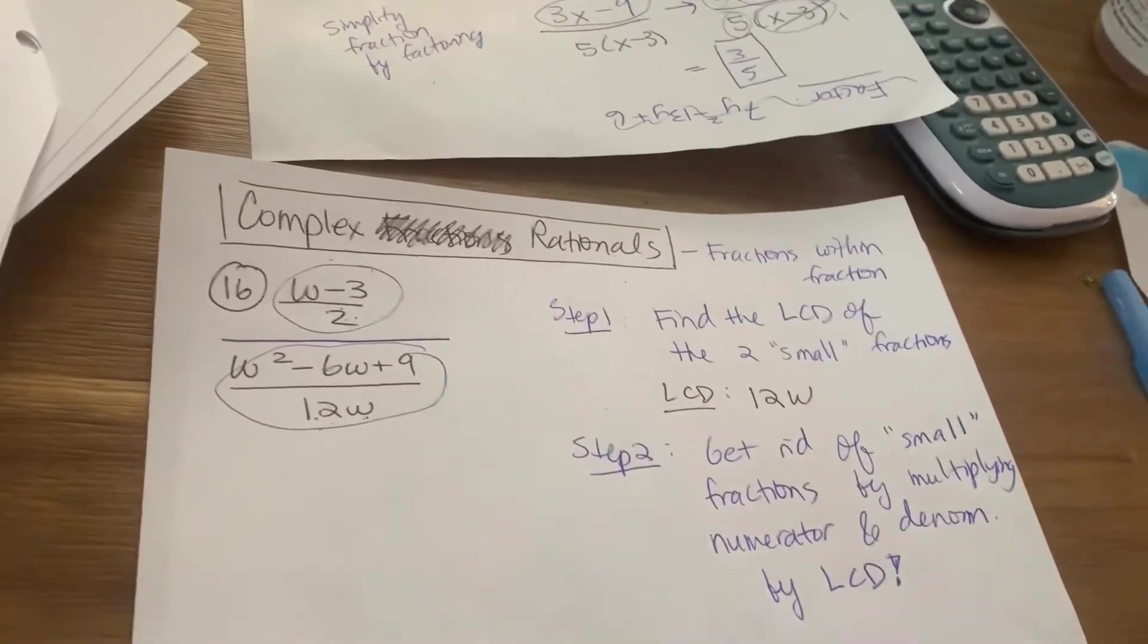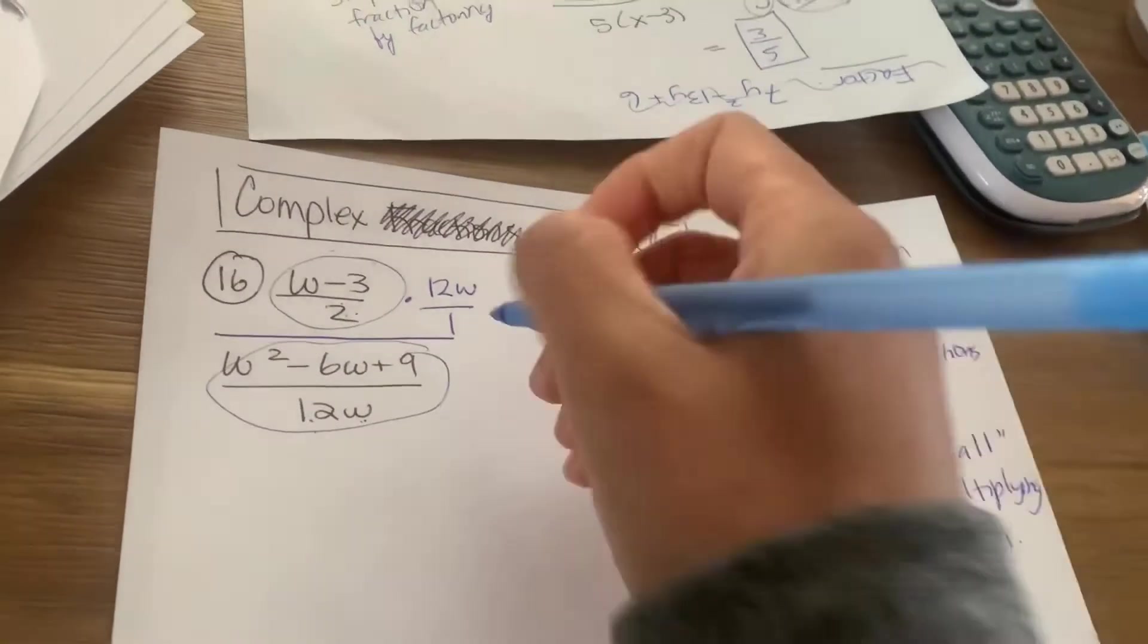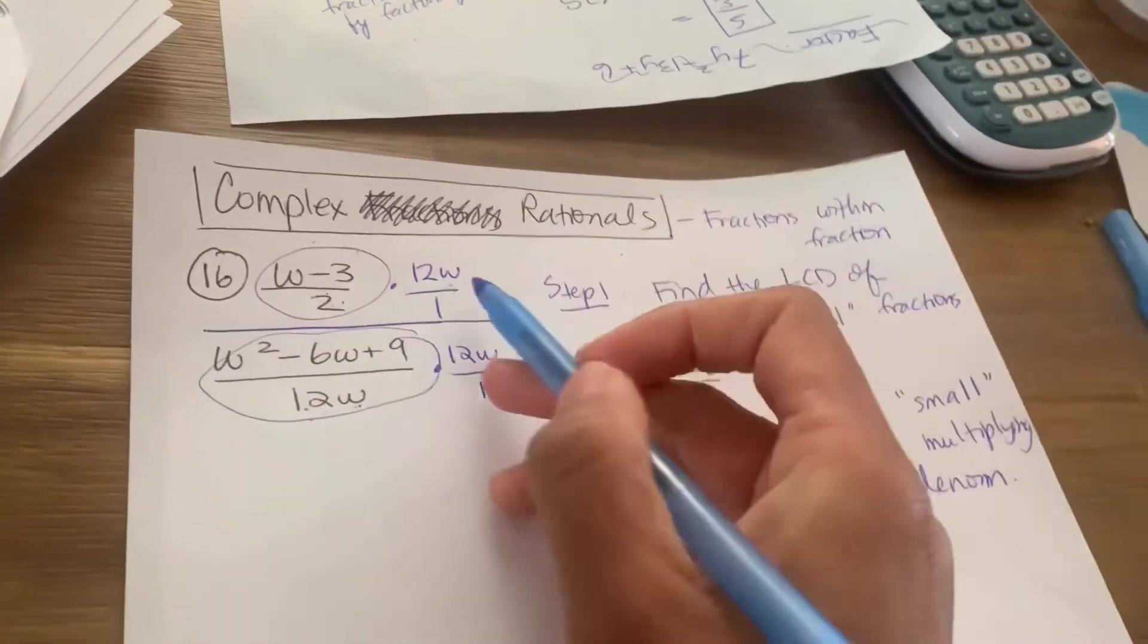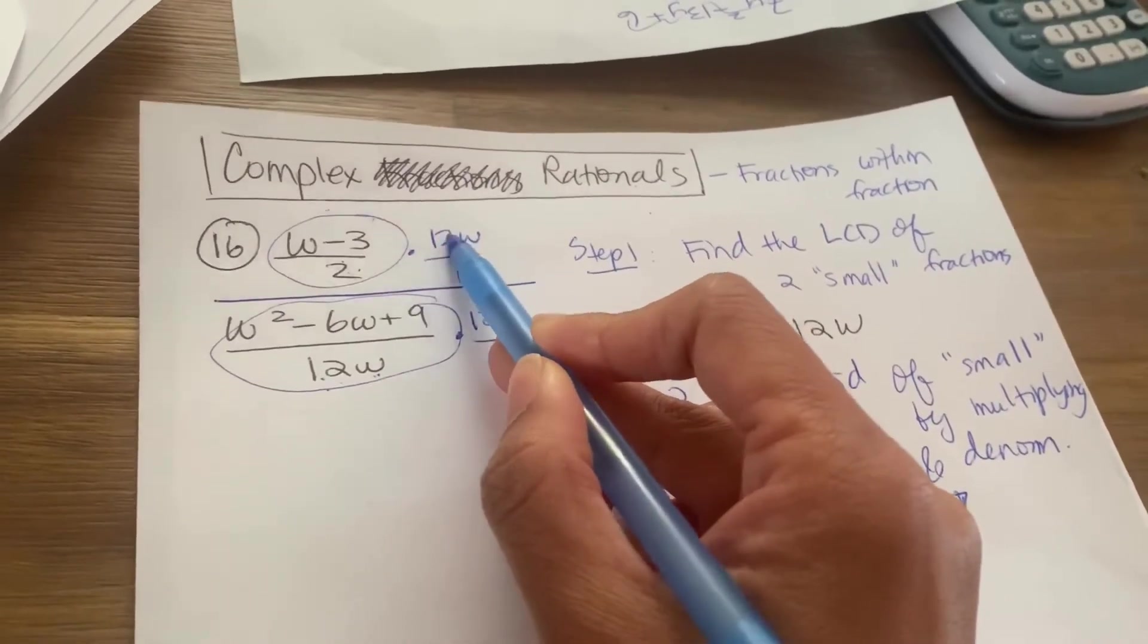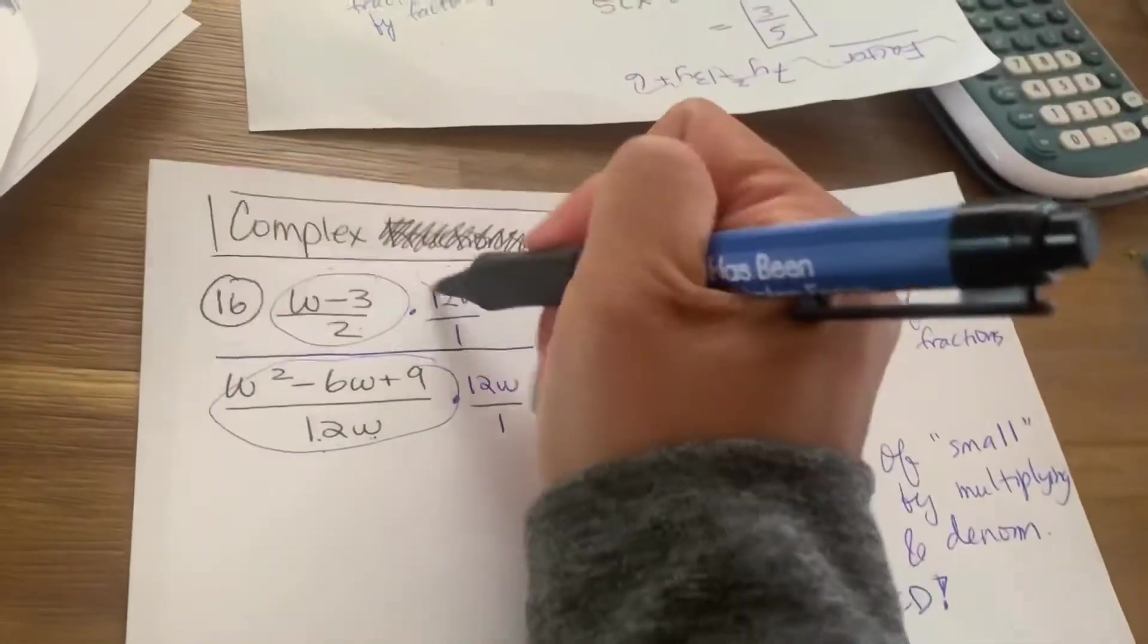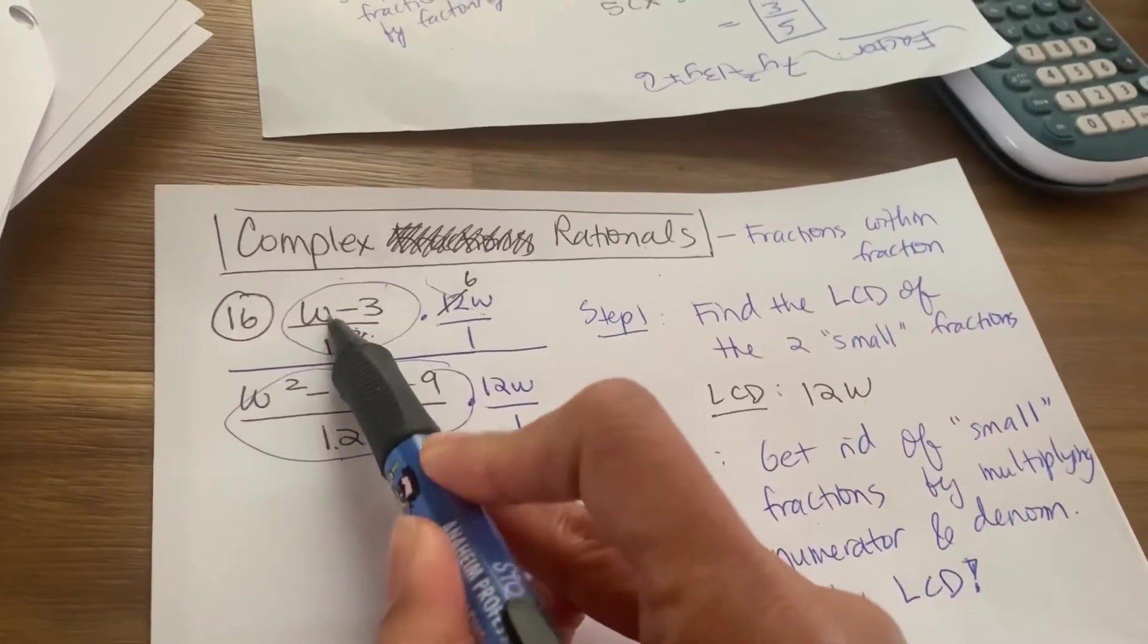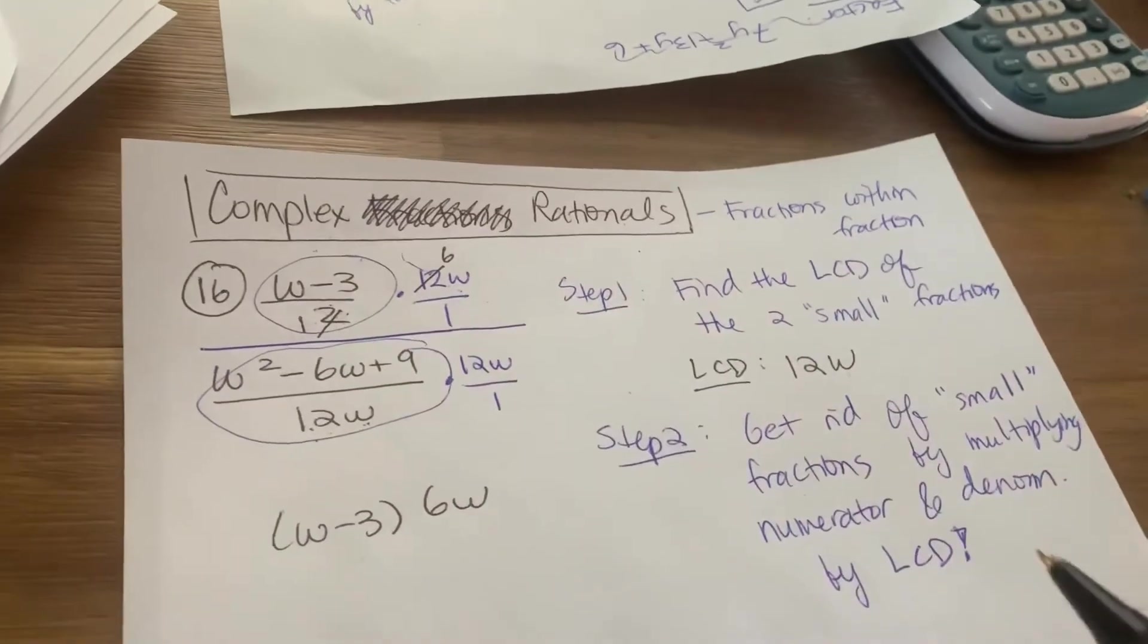So here I'm going to multiply everything by 12W. So 12W goes on top when you're multiplying, and I multiply by 12W here. So 12W is in the numerator, right? When you're multiplying it through. So here I'm going to multiply by 12W, and look what's going to happen. So if you chose the right LCD, 12 divided by 2 gives me 6. So this here cancels out, and I end up getting a 6 on top, and that just becomes a 1, right? So when I multiply the top, I get W minus 3 times 6W. So W minus 3 times 6W. That's the top.